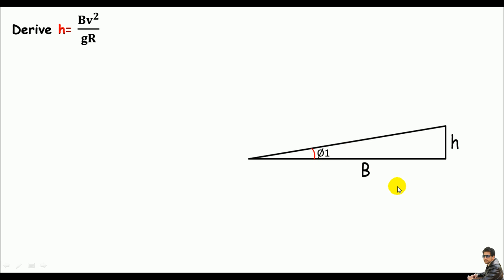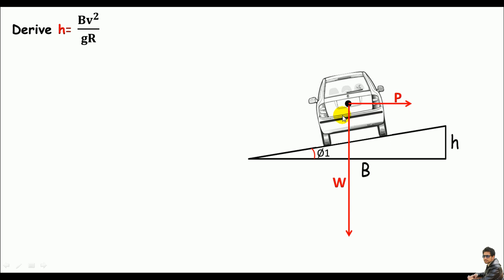Say there is a car traveling on the surface of this road. This point represents the center of gravity of the car. The weight of the car acts downward, and the centrifugal force acts from the center to the outside. Remember, this force will tend to overturn the vehicle to the outer side.